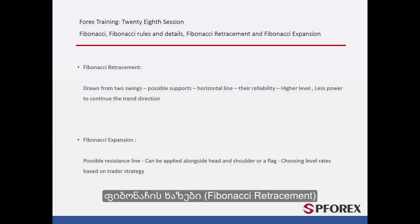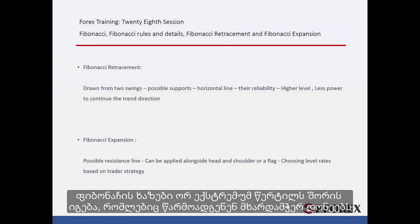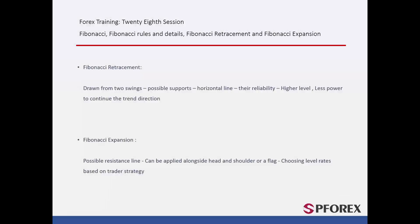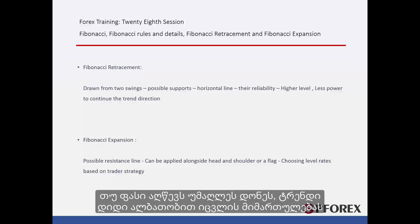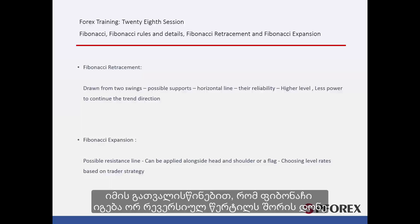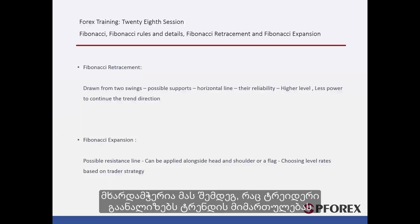Fibonacci Retracement can be drawn between two swings, which show probable supportive levels. The effect of each level may be applicable unless it is crossed by market price. If price reaches higher levels, the trend has more tendency to change direction. Considering that Fibonacci is drawn between two reverse points, levels are supportive when a trader realises the whole trend direction.